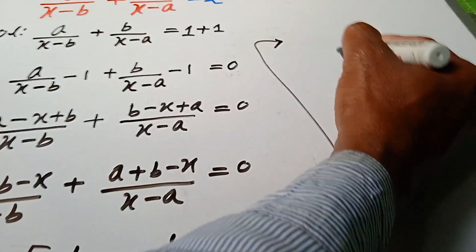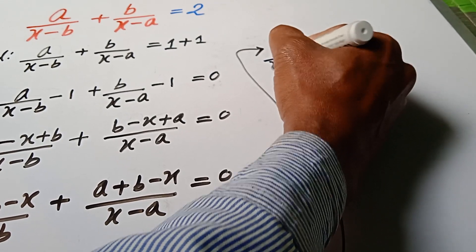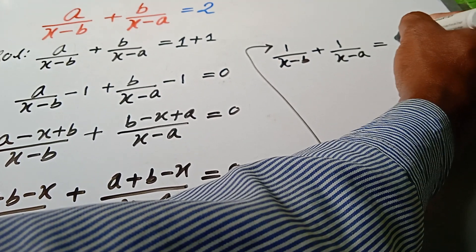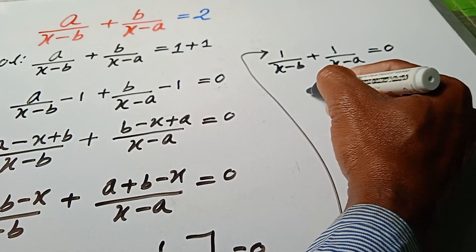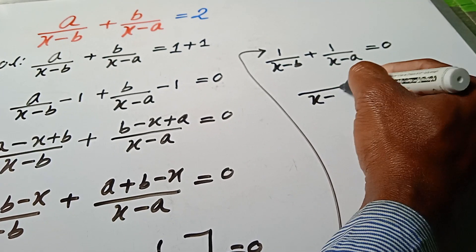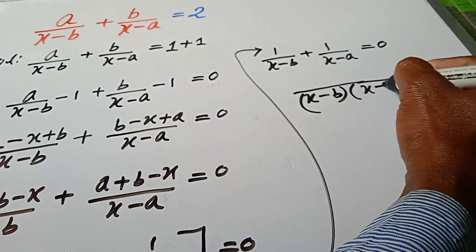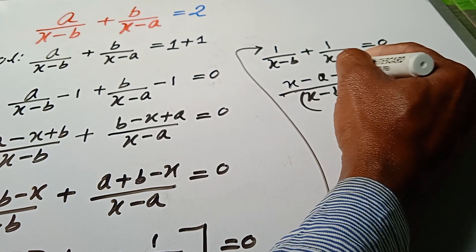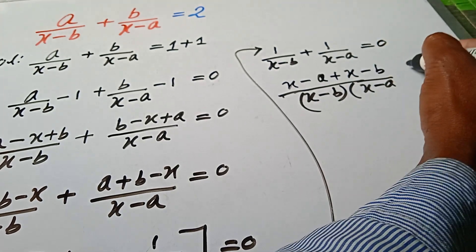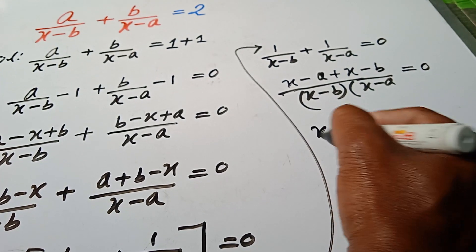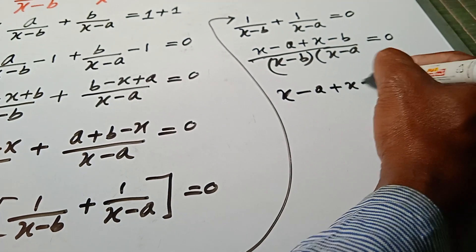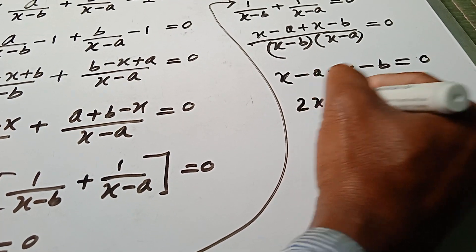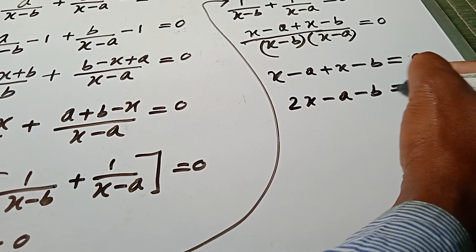Or 1 over x minus b plus 1 over x minus a equals 0. Using LCM, x minus a plus x minus b equals 0, which gives 2x minus a minus b equals 0.